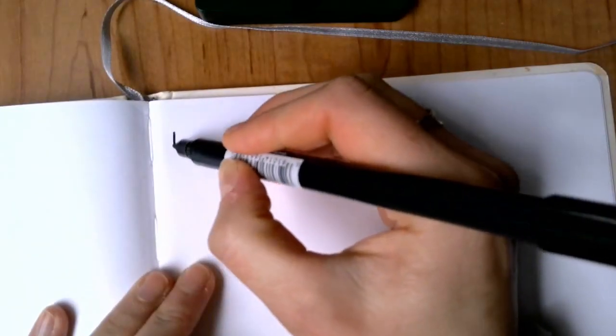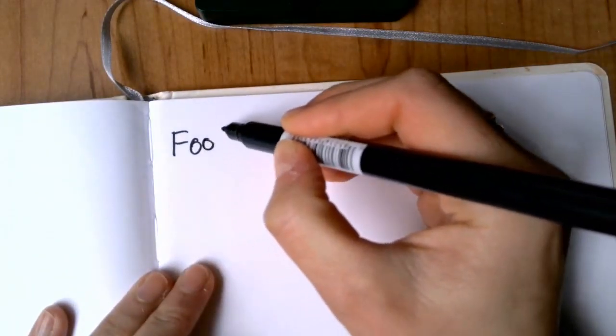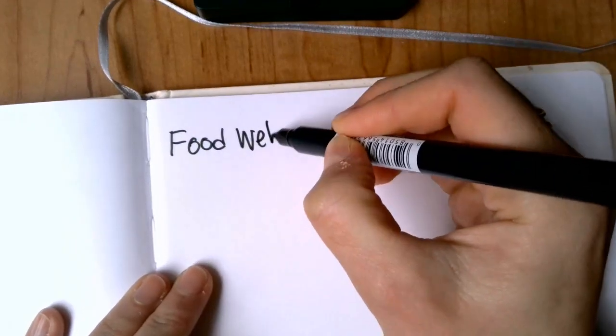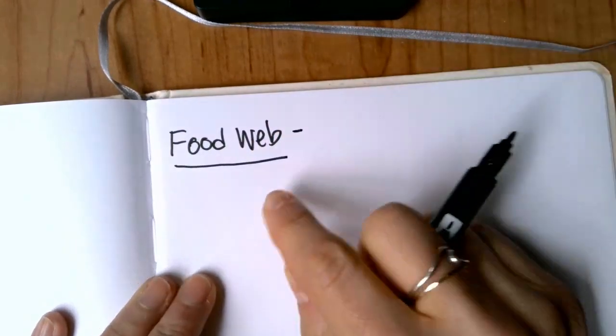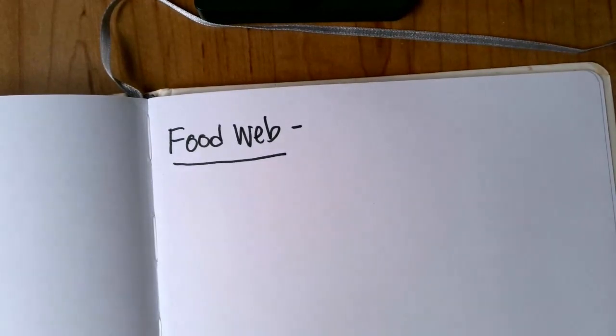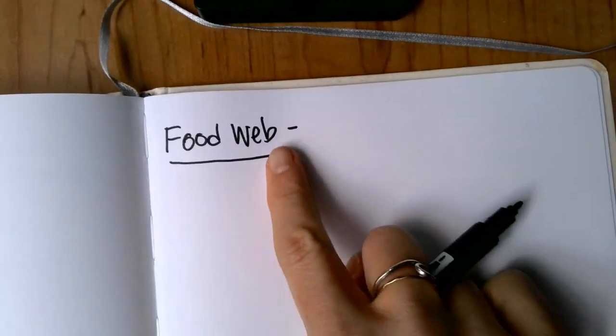First thing we're going to do is write the word food web and make sure that we have a definition for it. So when you're looking at this, you can even think of the word web like a spider's web. If you picture it in your head, a web has lots of connections.